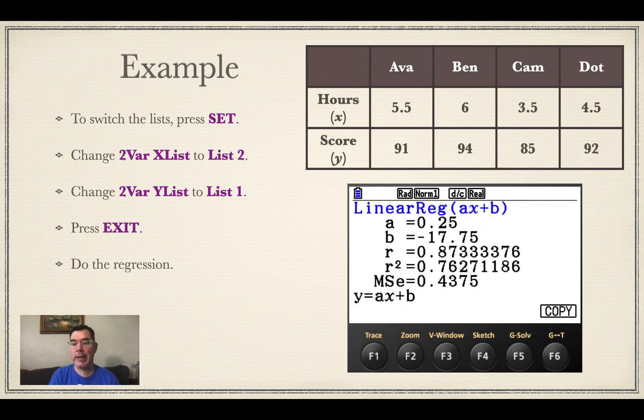Now you're going to have to ignore that line at the bottom that says Y equals AX plus B because what the calculator thinks is Y is actually my X and what the calculator thinks is X is actually my Y. So I write it as X equals 0.25 Y minus 17.75.